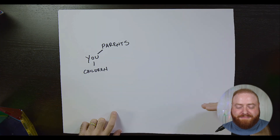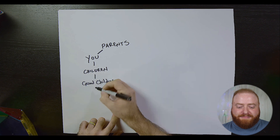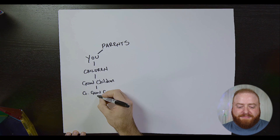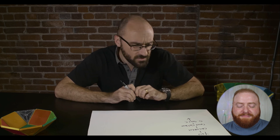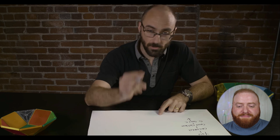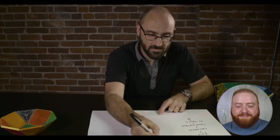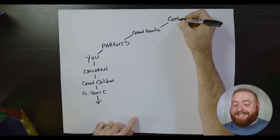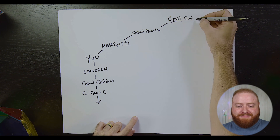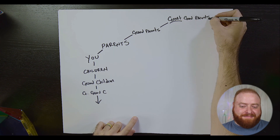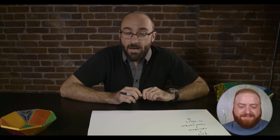A row on this chart represents a different generation. If my children have children, those people will be my grandchildren, and then their children will be my great-grandchildren, and this continues for as long as reproduction continues to happen. But my parents also had parents — I call those people my grandparents. Their parents are my great-grandparents.